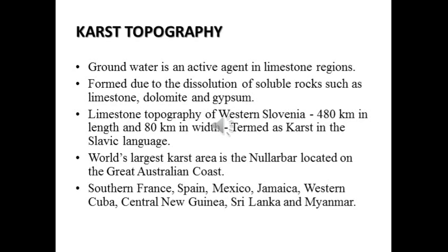Groundwater is an active agent in limestone regions. Karst topography is formed due to the dissolution of soluble rocks such as limestone, dolomite and gypsum. These soluble rocks dissolve in groundwater and thus create the hollow cave-like appearance.